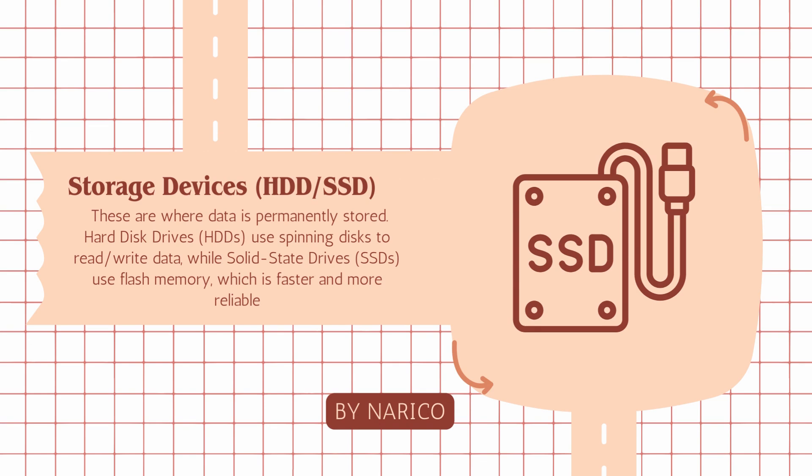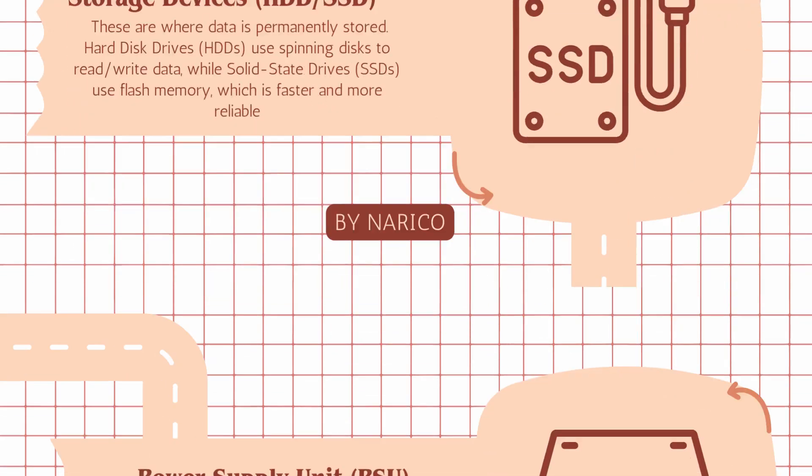Storage devices — HDD/SSD: these are where data is permanently stored. Hard disk drives, HDDs, use spinning disks to read/write data, while solid state drives, SSDs, use flash memory, which is faster and more reliable.